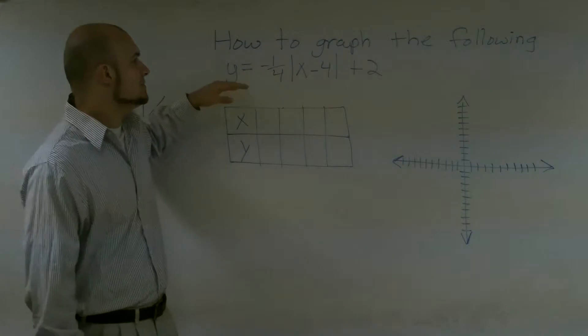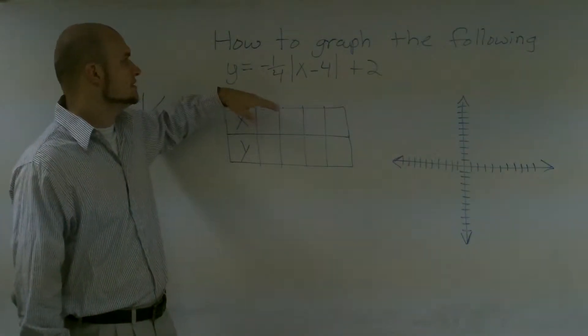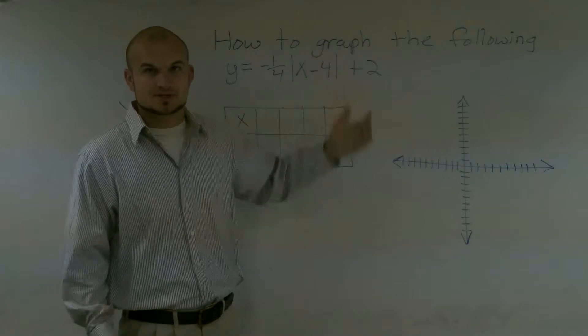Alright, what I'd like to do is show you how to graph the following: y equals negative 1/4 times the absolute value of x minus 4 plus 2.